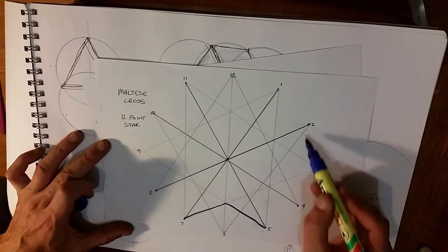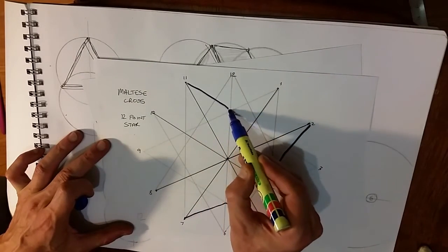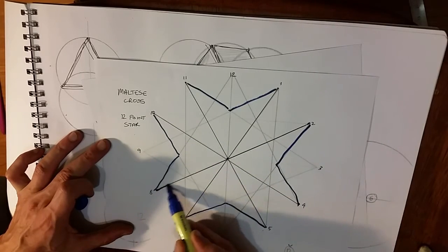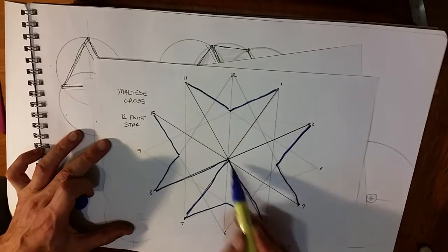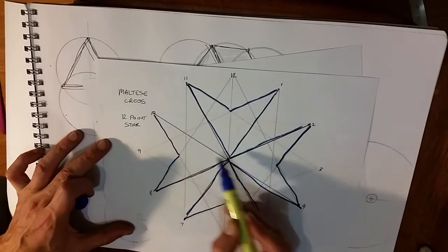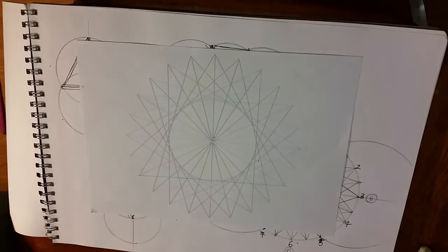Here we have our Maltese cross originating from the 12-pointed star. Now here we have a 24-pointed star and this is where we get the Templar cross.